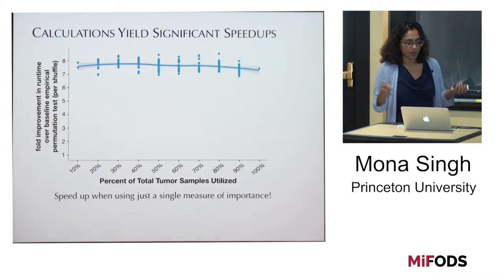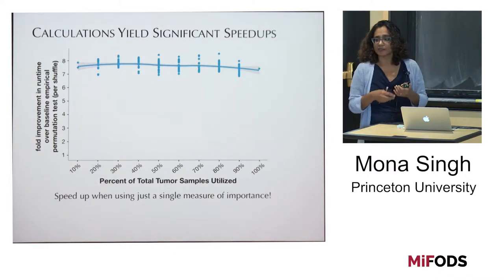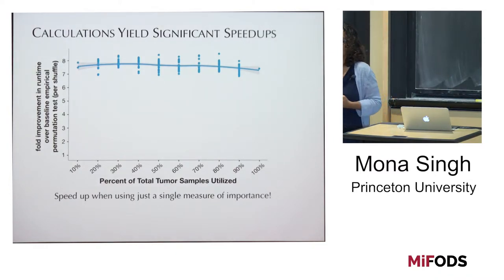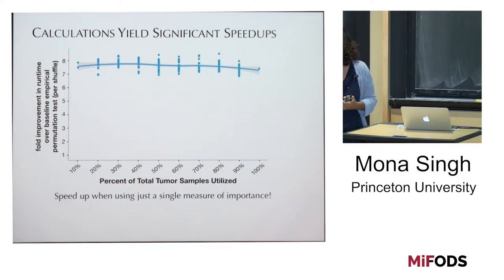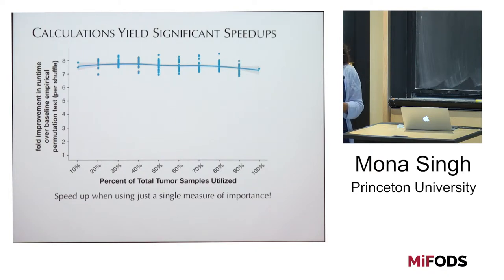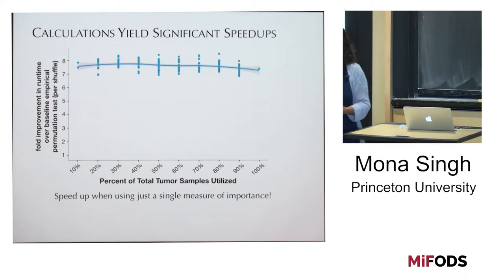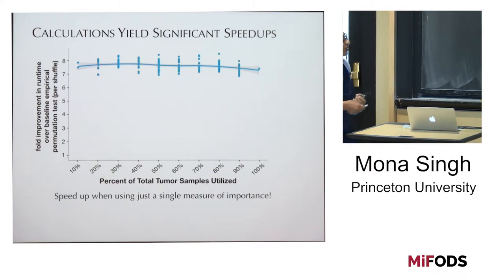Regarding the size of the permutation test — it really varies a lot per protein. It can be hundreds, or it can be just a handful. For some proteins we know a lot of information, and for other proteins we know less.